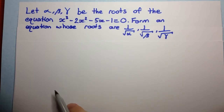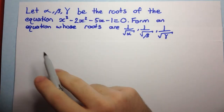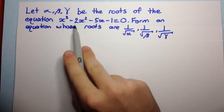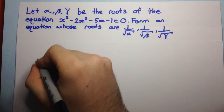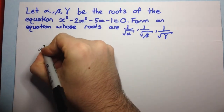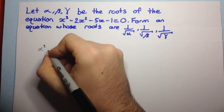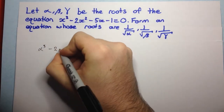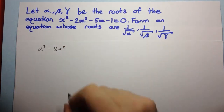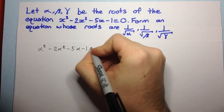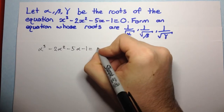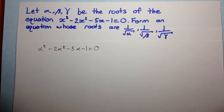So if we know that alpha, beta, and gamma are the roots of this equation, that means alpha, beta, and gamma satisfy that equation. And so we have alpha cubed minus 2 alpha squared minus 5 alpha minus 1 equals 0.